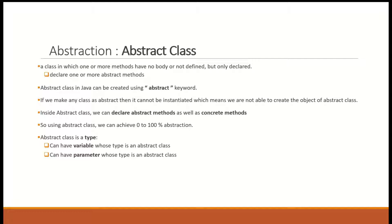If you make any class abstract, then it can't be instantiated. You cannot create an object of an abstract class because it contains abstract methods — methods with no implementation — making it an incomplete class. You cannot create an object from an incomplete class. Inside an abstract class, we declare abstract methods as well as concrete methods. A concrete method is a complete method with a signature and body implementation. An abstract method contains only the method signature with no implementation.